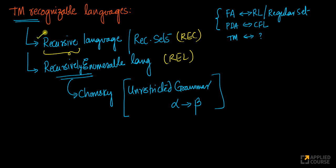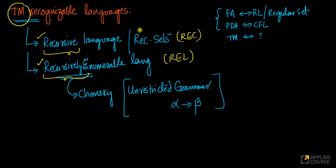Not exactly. These terms — recursive language and recursively enumerable language — were in mathematical usage even before Turing machines were discovered, pre-1930s. They were not named because of recursion in programming or recursion related to Turing machines. Their names have a long history beyond the scope of this course.